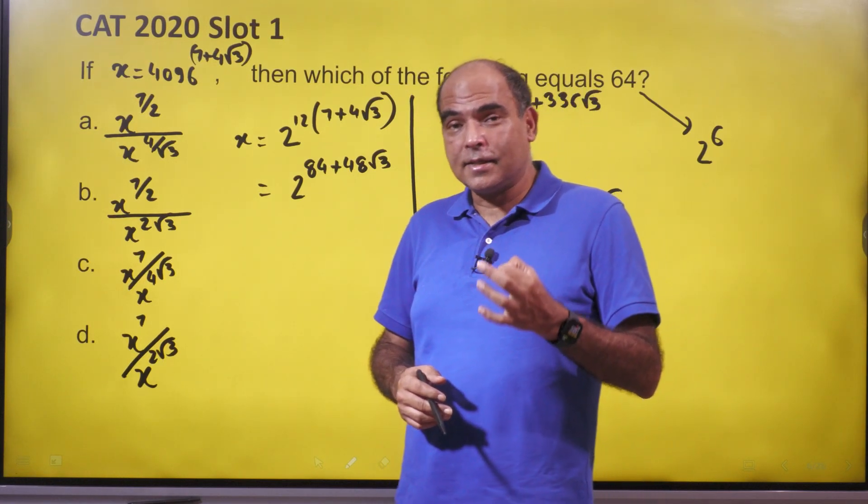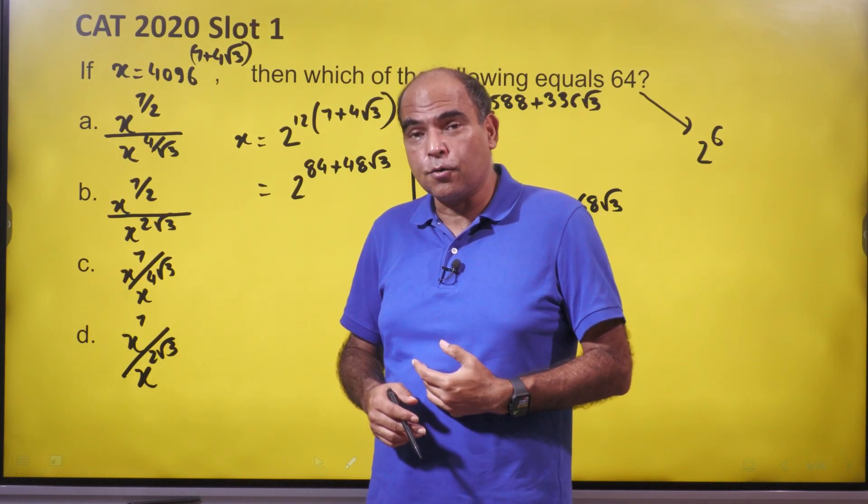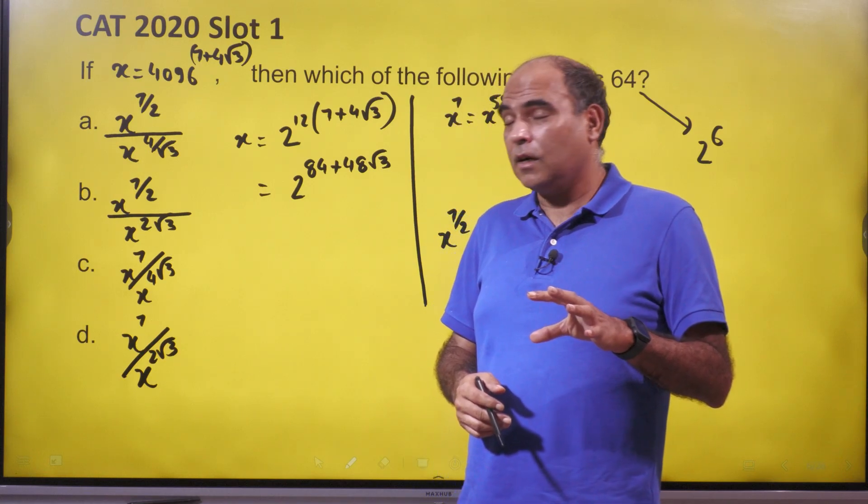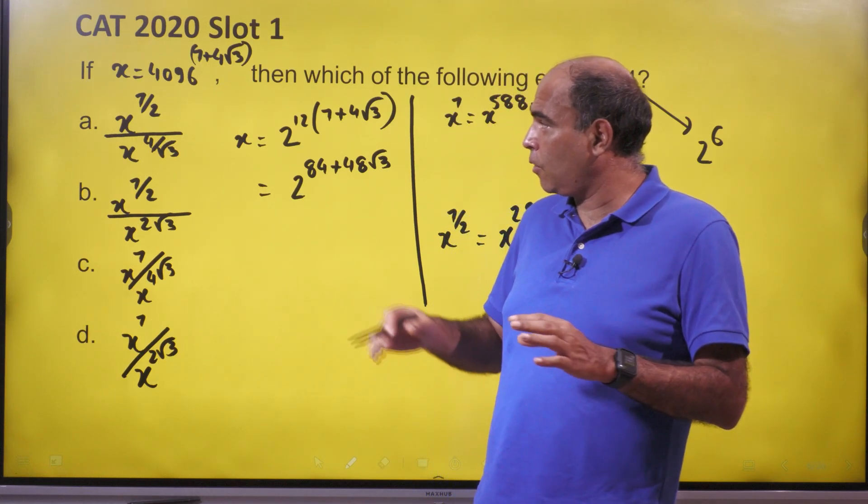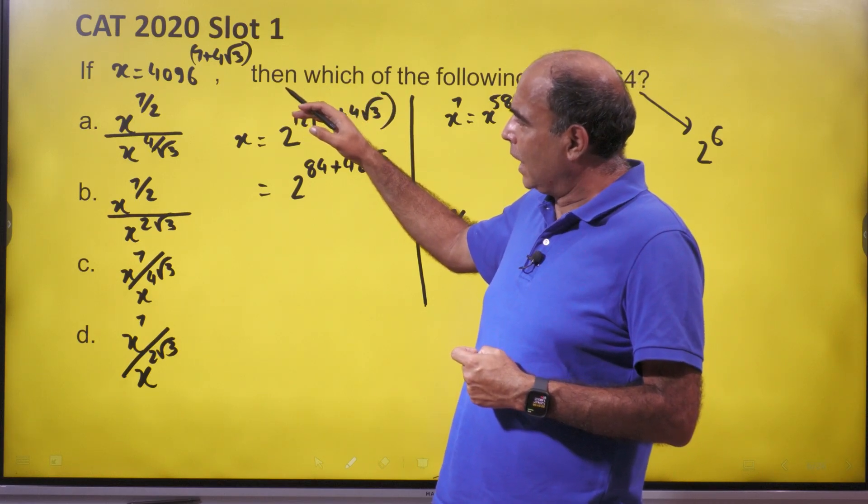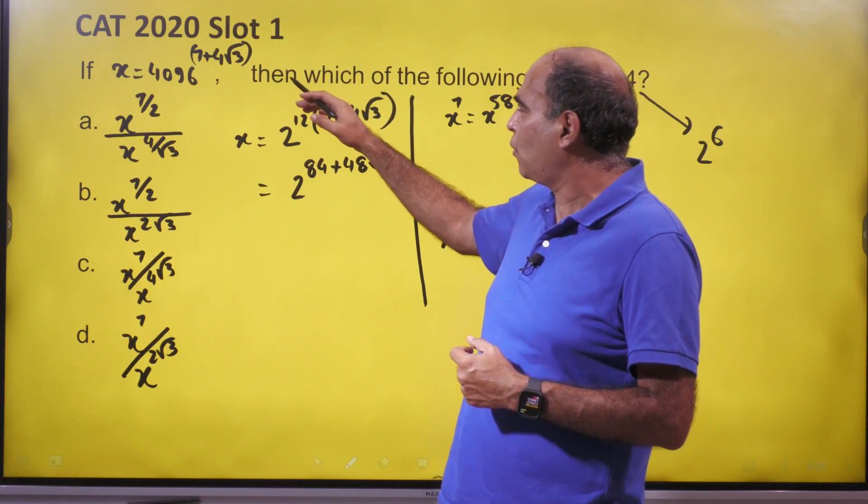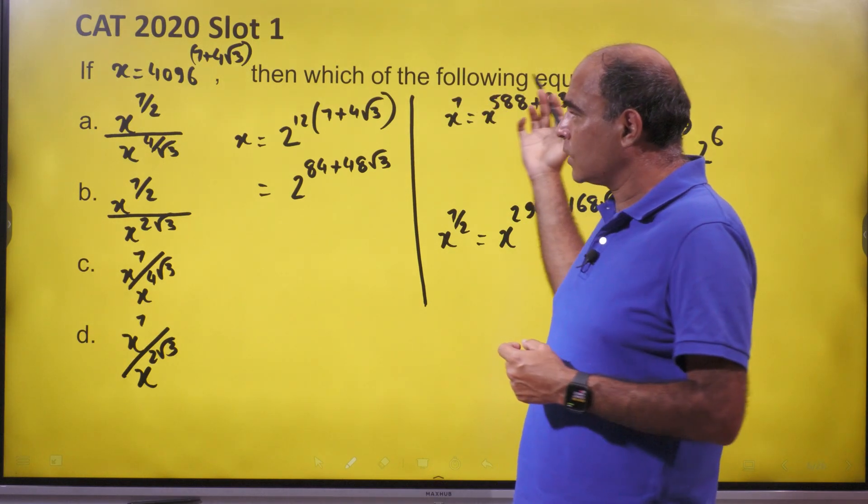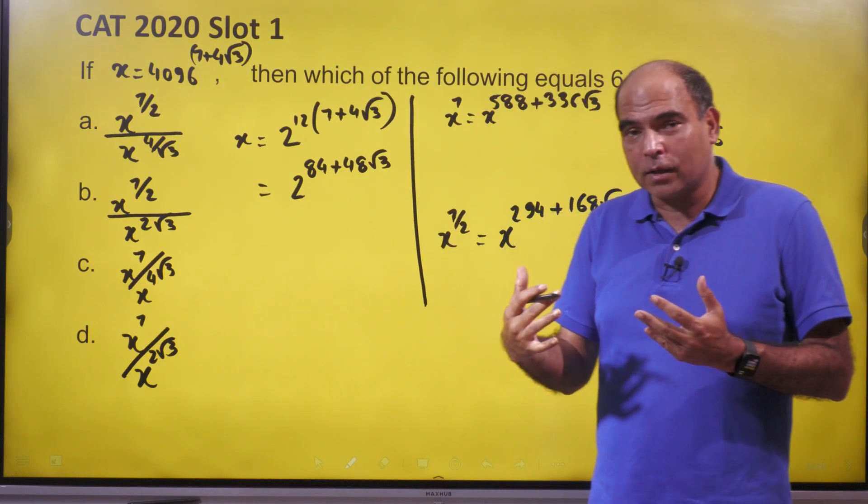Hey guys, welcome back to the CAT 60 Second Solution Series with me, Arun Sharma. In this video, I'm talking about a question from CAT 2020 Slot 1. This question says x equals 4096 raised to 7 plus 4 root 3. Which of the following equals 64? It looks intimidating to start with, but there's a very simple way to solve this.